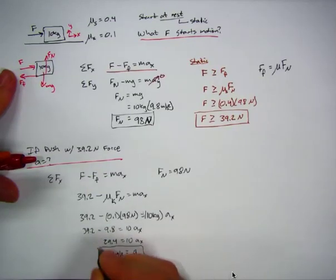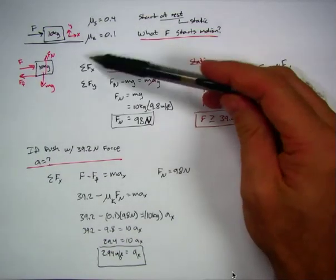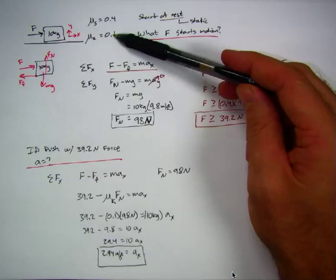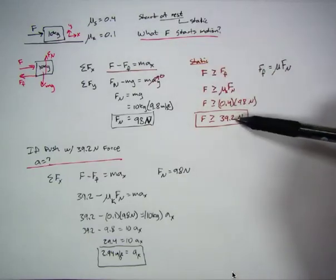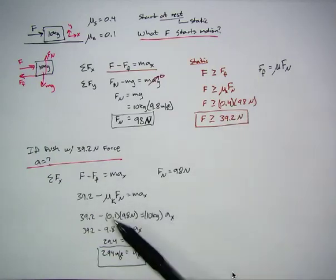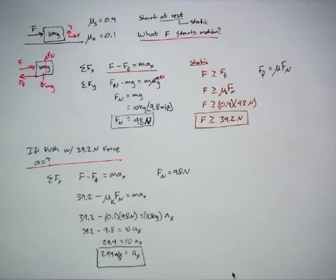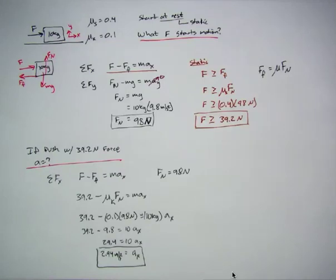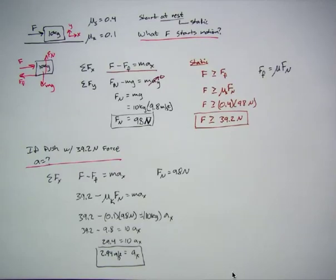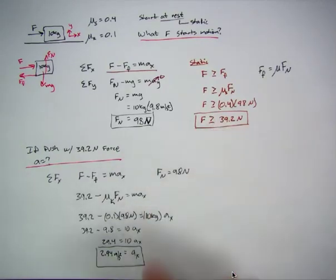So we now have an acceleration of 2.94 m/s² for the box under kinetic friction. At 39.1 newtons static friction holds and nothing moves; at 39.2 newtons it moves and we immediately switch to the kinetic case to find the acceleration. With this acceleration we could answer follow-up questions like how far the box travels in 10 seconds or what the velocity is after 10 seconds. But we had to first calculate the static case before we could calculate the kinetic case.